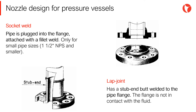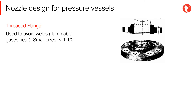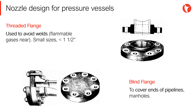Lap joint flanges use a stub end that is butt welded to the pipe. The flange drills do not have to be carefully aligned before welding, which simplifies the installation. Threaded flanges are useful when welding is to be avoided, such as in processes where flammable gases may exist. And finally, we have the blind flange, used to cover ends of pipelines, manhole openings of pressure vessels, and hand holes.